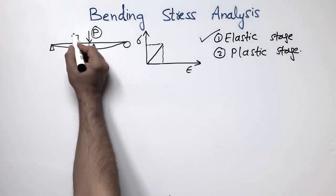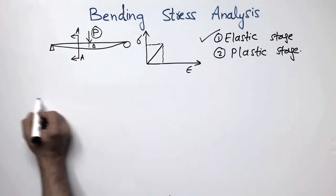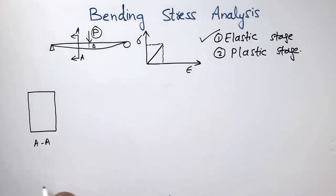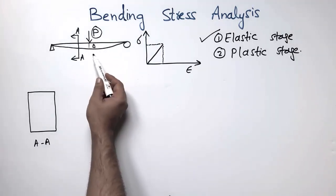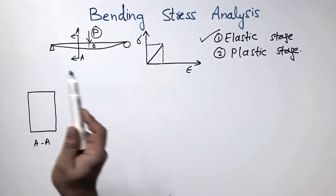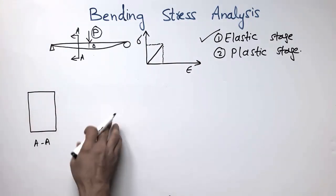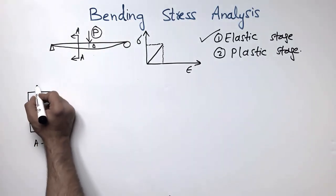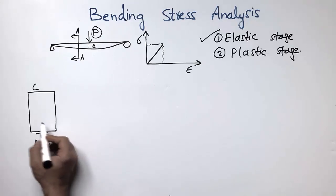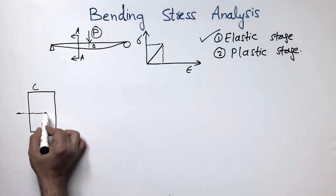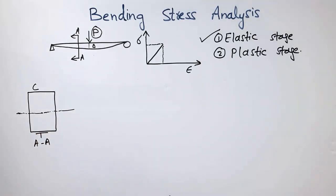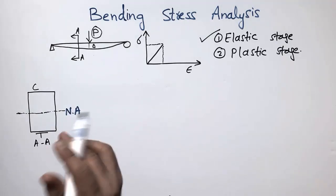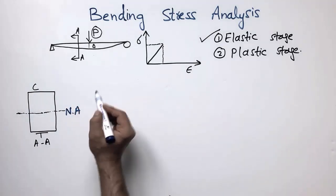If I take cross-section AA of this beam, due to this load, some stresses are created which are called bending stresses because they arise from the bending of the beam. Bending stresses have two types: compression and tension. Compression is created at the top of the beam and tension at the bottom. There is a middle axis where there is a transition from compression to tension, and we call this the neutral axis of the beam.